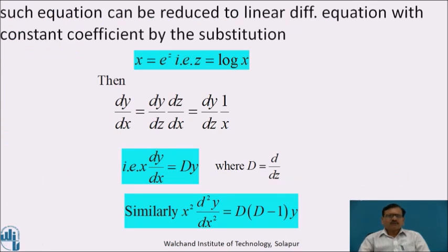Such an equation can be reduced to a linear differential equation with constant coefficients by using the substitution x = e^z, that is z = log x. Then we can calculate the value of dy/dx: dy/dx = dy/dz · dz/dx. Here, dz/dx = 1/x, which equals dy/dz · 1/x.